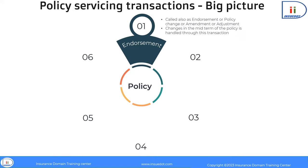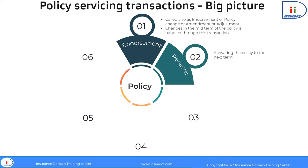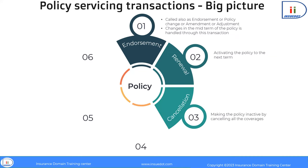Normally, an endorsement or policy change is issued to the insured once the change is accepted by the insurer. A P&C insurance policy in personal lines is issued for a fixed term — usually six months or one year in the USA. At the expiration of the term, the policy is renewed for the next term. This transaction is called renewal.